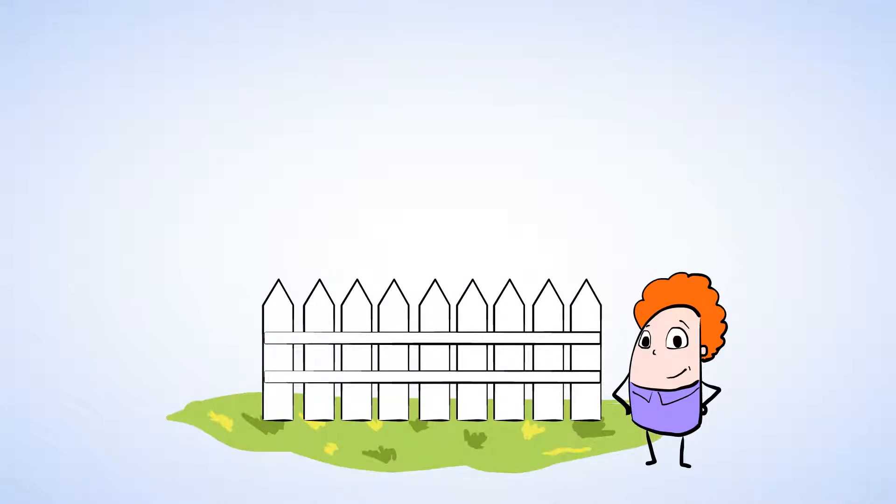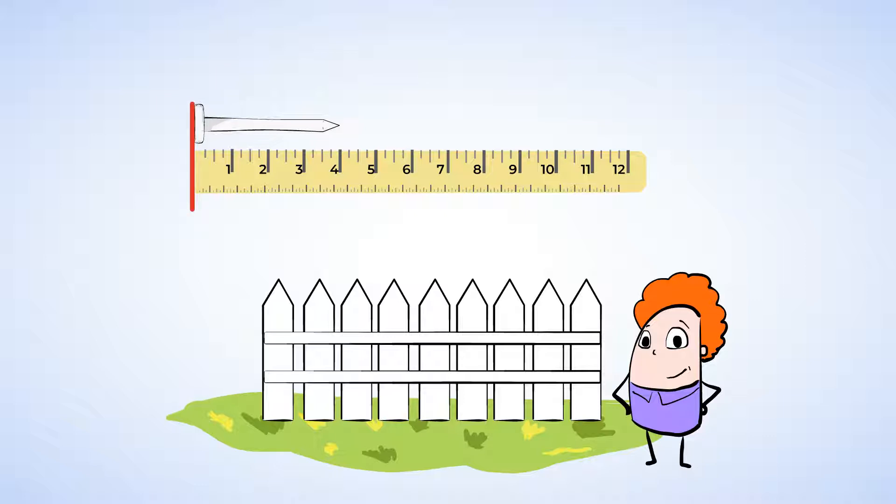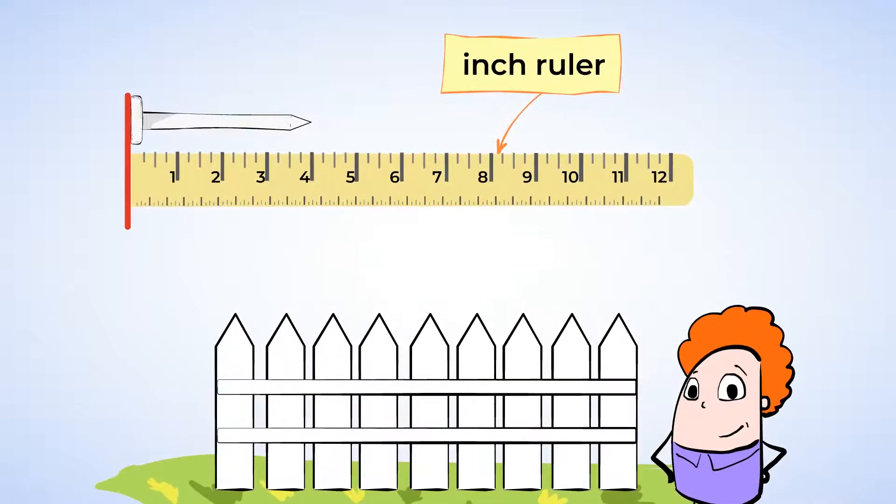Oh look, there are some nails over here from a fence that is being built. Let's see how long one nail is. Before we see how long the nail is though, we need to make sure we have the ruler set up correctly. This is an inch ruler. Some rulers have a zero mark on them. This one just starts at 1.